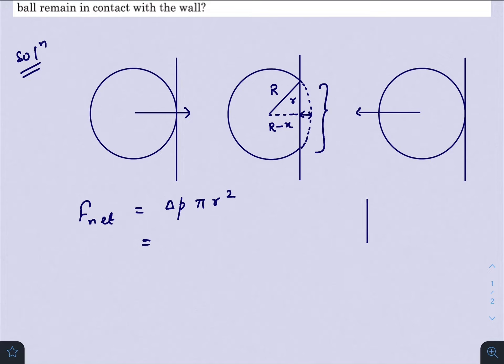And if you see the triangle here, it is small r, capital R, and this one is capital R minus x. So small r square will be capital R square minus capital R minus small x square. So taking R square common, we get this one.